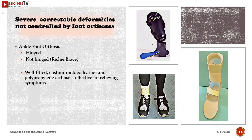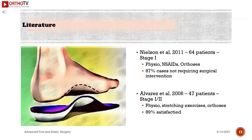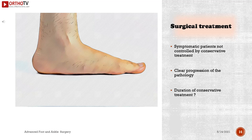Severe correctable deformities not controlled by foot orthoses may require ankle-foot orthoses (hinged or non-hinged), Richie brace, or well-fitted custom-molded leather and polypropylene orthoses, which are effective for relieving symptoms. Nielsen et al. (2011): 64 patients with stage 1 treated with physiotherapy, NSAIDs, stretching exercises, and orthoses — 87% did not require surgical intervention. Alvarez et al. (2006): 47 patients at stage 1/2 treated with physiotherapy, stretching exercises, and orthoses — 89% were satisfied.